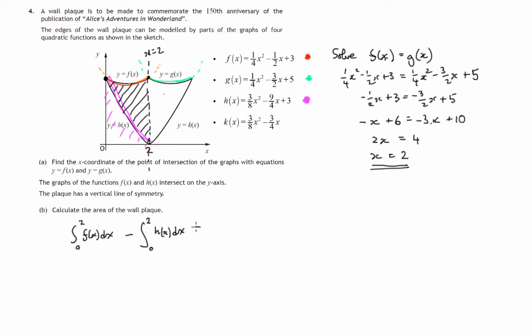And it'll be a lot easier to do this if we do the subtraction of these formulas and then integrate. So we'll have the integral from 0 to 2 of f(x), which is 1 quarter of x squared minus 1 half x plus 3, that's the red curve, minus the whole of h(x). That's minus this, minus this, minus this. So it's minus 3 eighths of x squared, minus the negative 9 quarters x, so that's plus 9 quarters x, and then minus this 3.